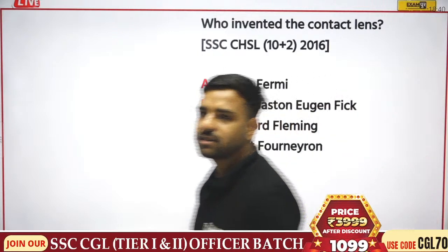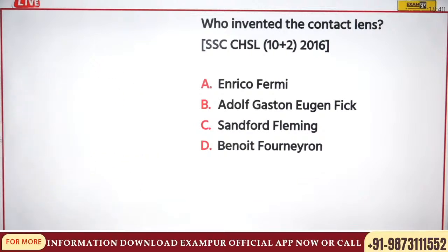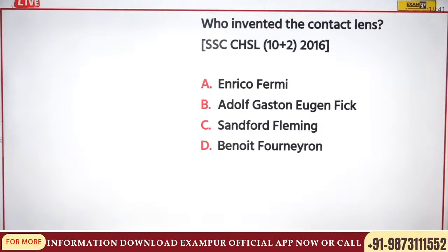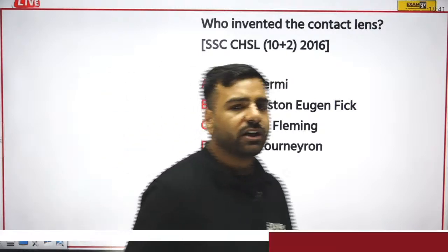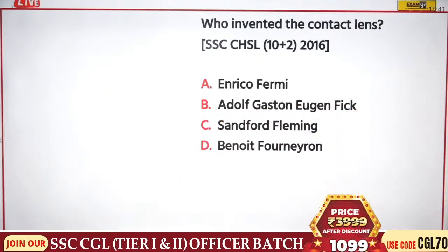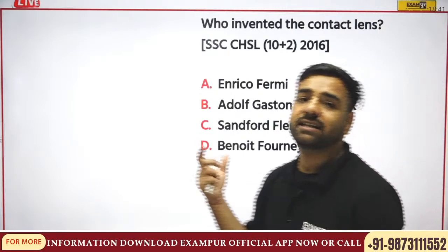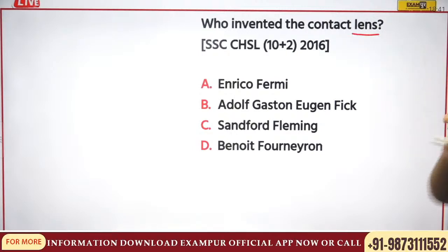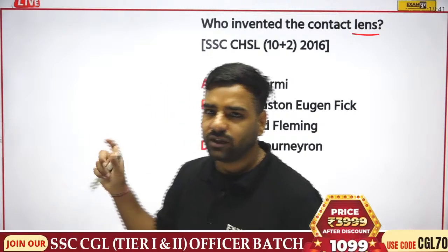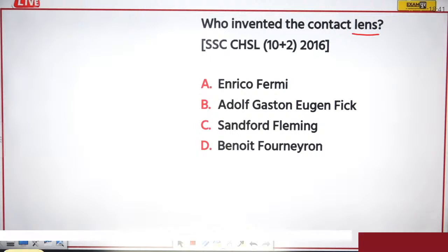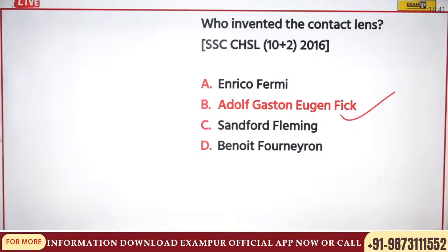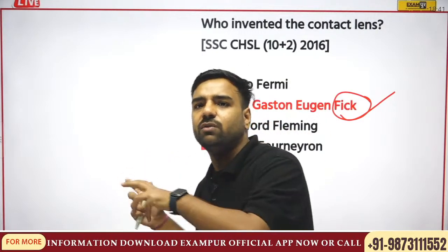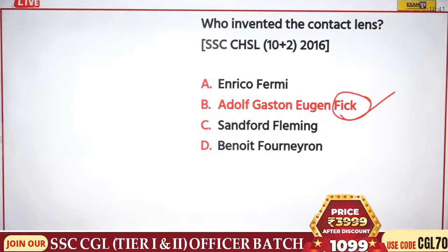From CHSL 10+2: who invented the contact lens? Contact lenses are made of glass — flint glass. Eyes flicker, so from flickering we go to 'Fick.' The contact lens was discovered by Adolf Gaston Eugen Fick. Remember: from the flickering of eyes, the name Fick — Adolf Gaston Eugen Fick discovered contact lenses.